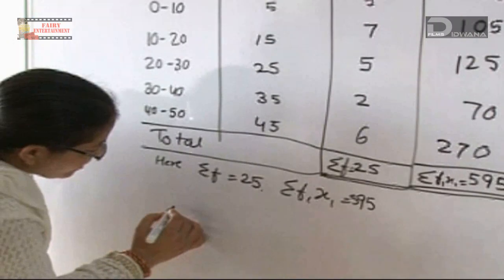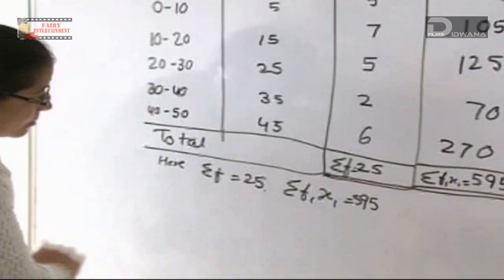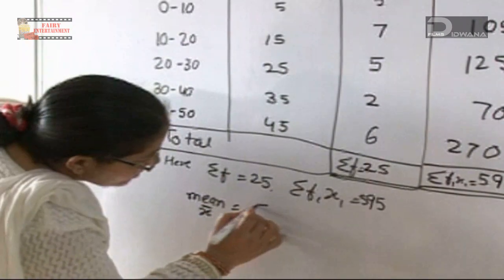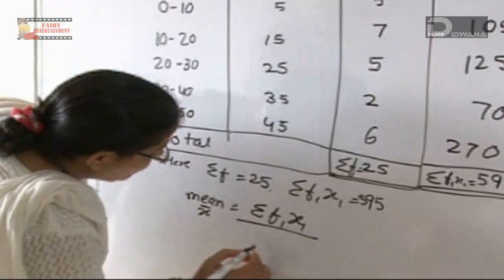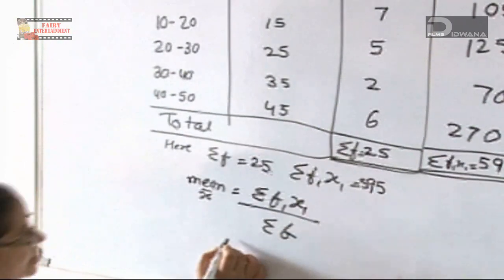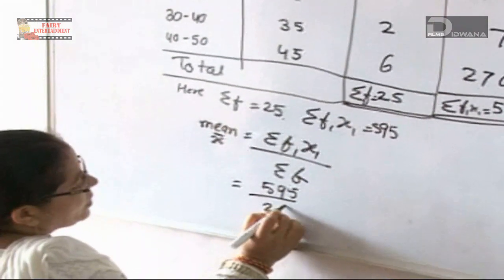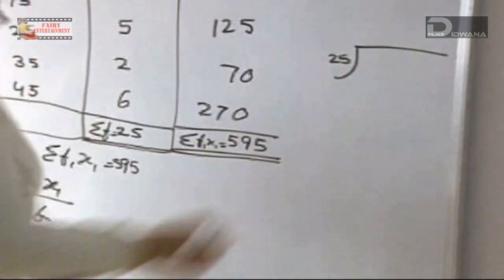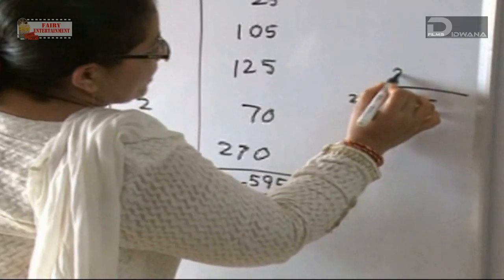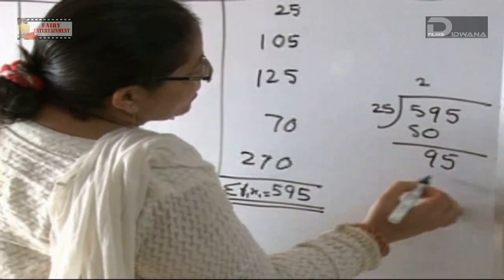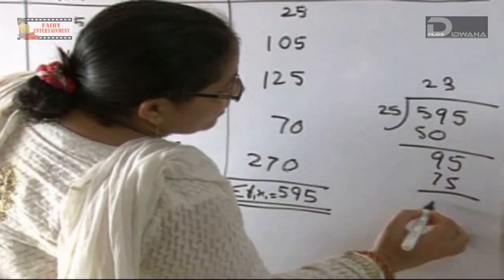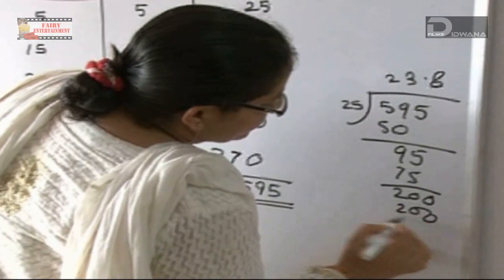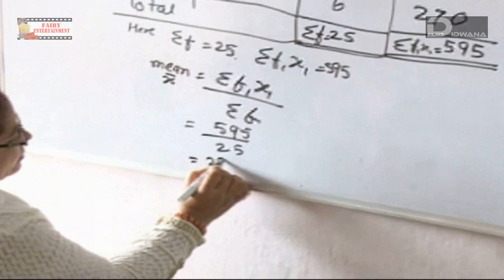The formula for mean is: x̄ = sum of (f·x) divided by sum of f. That gives us 595 divided by 25. Dividing: 25 goes into 595 — 25×2=50, remainder 95; 25×3=75, remainder 20; bringing down gives 200, 25×8=200. So the answer is 23.8.